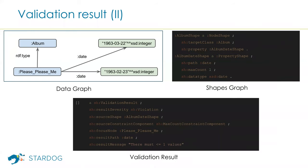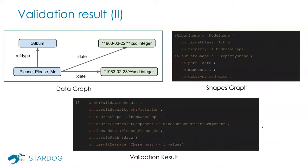Let's look at another validation result example with the same simplified album shape but now with the max count constraint. In our data graph, we have two distinct date values associated with the album. The validation result is structurally very similar — the source constraint component now says it's a max count constraint that was violated. There is also no value node in this validation result, because as we mentioned, count constraints are not about a single value node — so you won't get a value node for violations of count constraints.